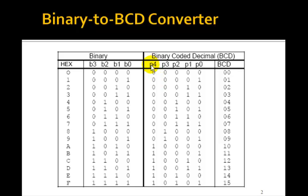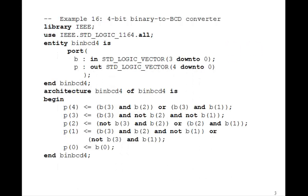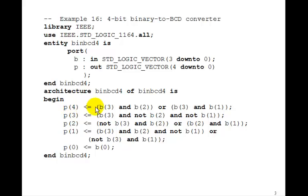And we could write Karnaugh maps for each of these: P4, P3, P2, P1, P0. And if you did that, these would be the logic equations which we could just put in the architecture of this VHDL program. The input B is 4 bits, 3 down to 0, and the output P is 5 bits, 4 down to 0. And P4 is just B3 and B2, or B3 and B1, and so forth.